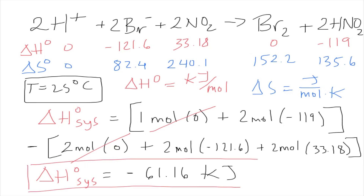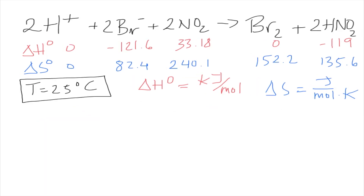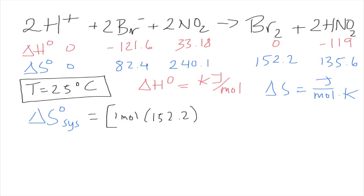Now we need to find the change in entropy of formation for the system. We follow the same steps. Delta S for the system will start with the products: bromine still has one mole, so we open brackets — one mole times 152.2. This time the units are joules over mole Kelvin, so the final change will be in joules over Kelvin, which we'll later convert to kilojoules.